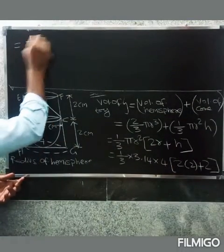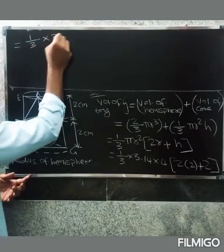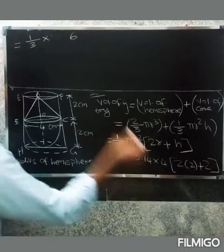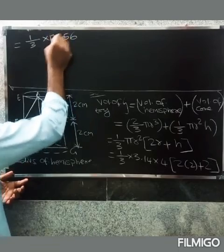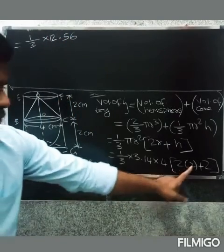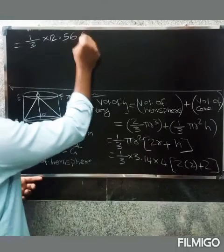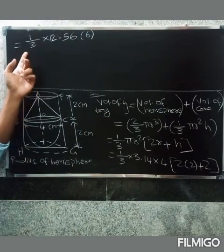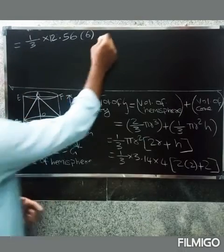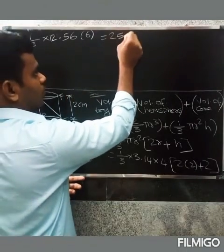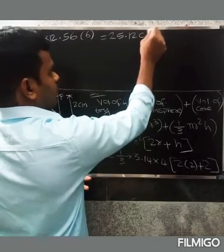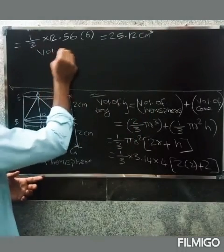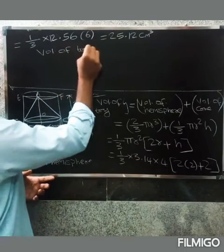So: 1/3 into 3.14 into 4 into 6. That gives 3.14 × 4 = 12.56, then 12.56 × 6 = 75.36, divided by 3 = 25.12 cm³.